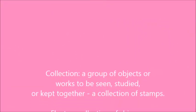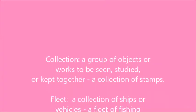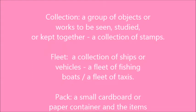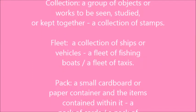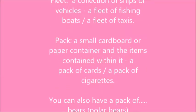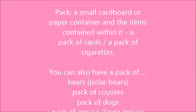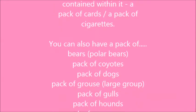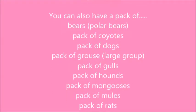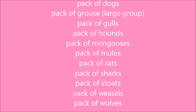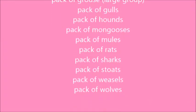Collection: a group of objects or works to be seen, studied, or kept together — a collection of stamps. Fleet: a collection of ships or vehicles. Pack: a small cardboard container — that can be a pack of cigarettes for example. But you can also have a pack of gulls, a pack of hounds, a pack of mules, a pack of weasels.